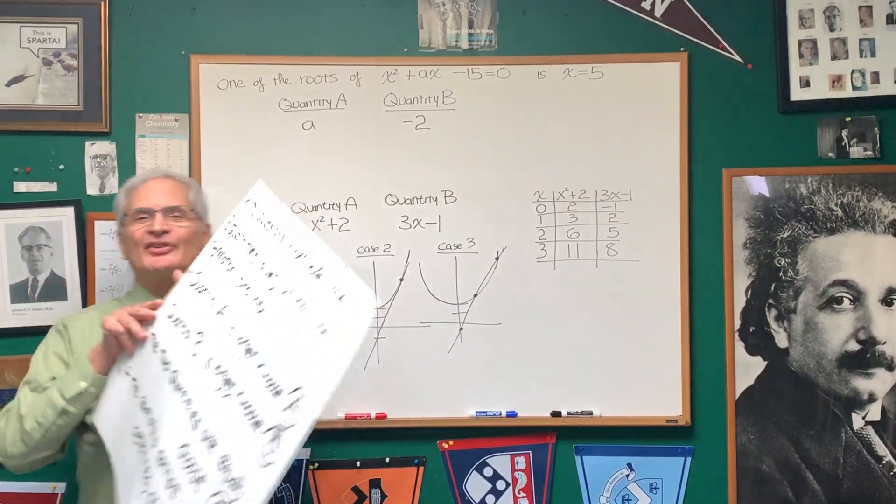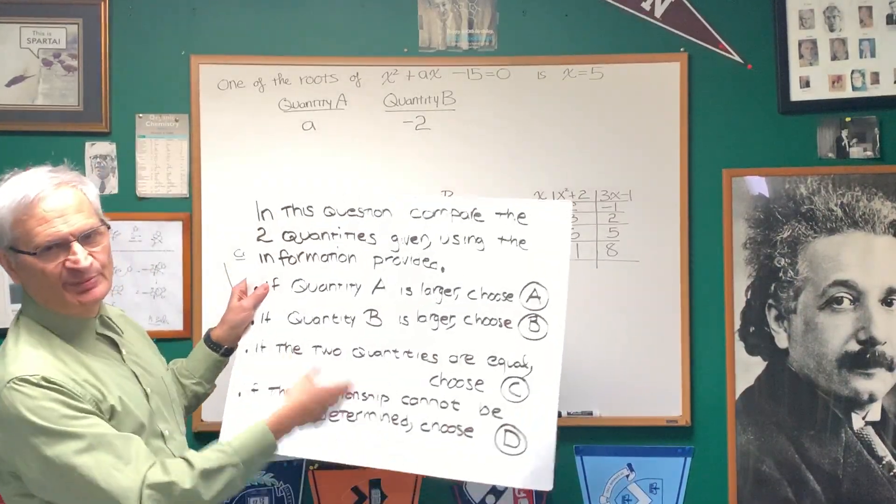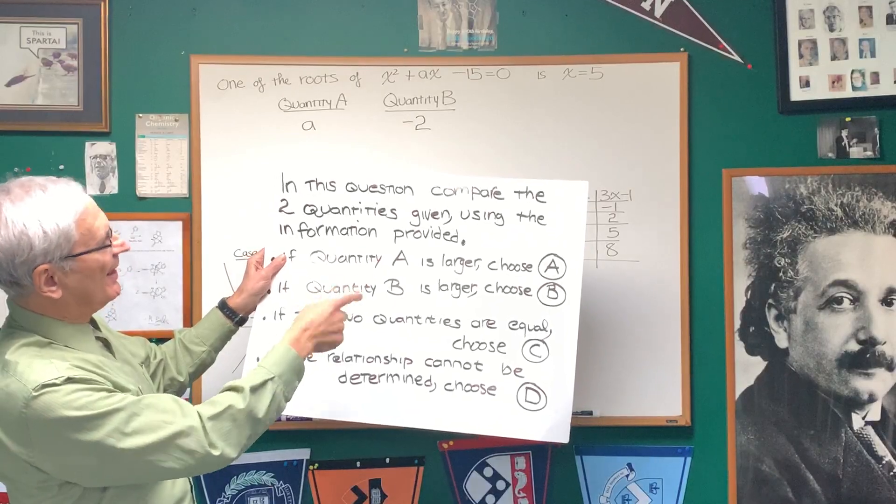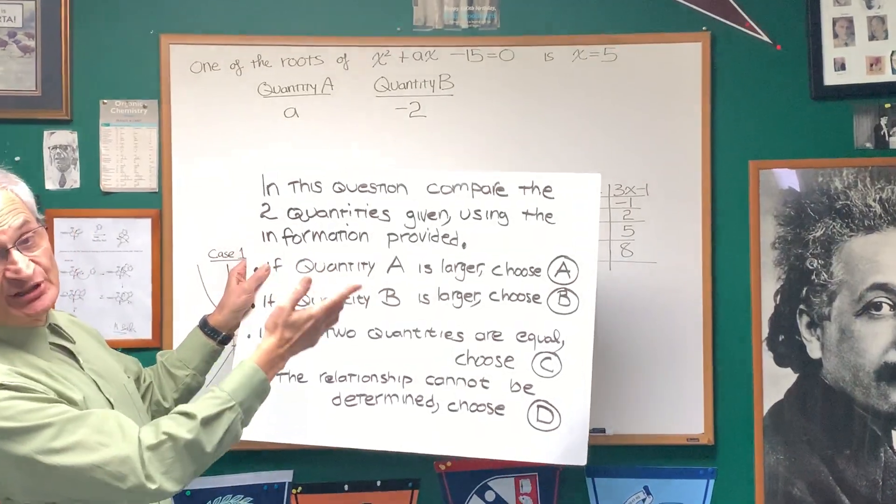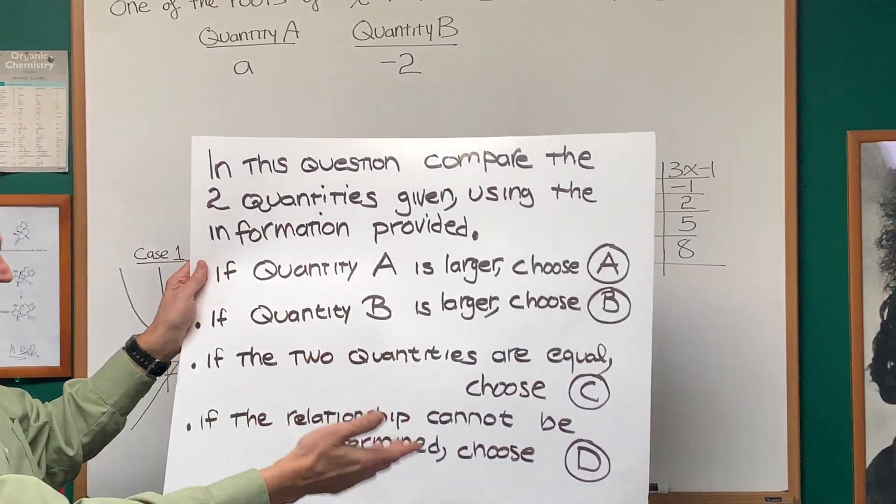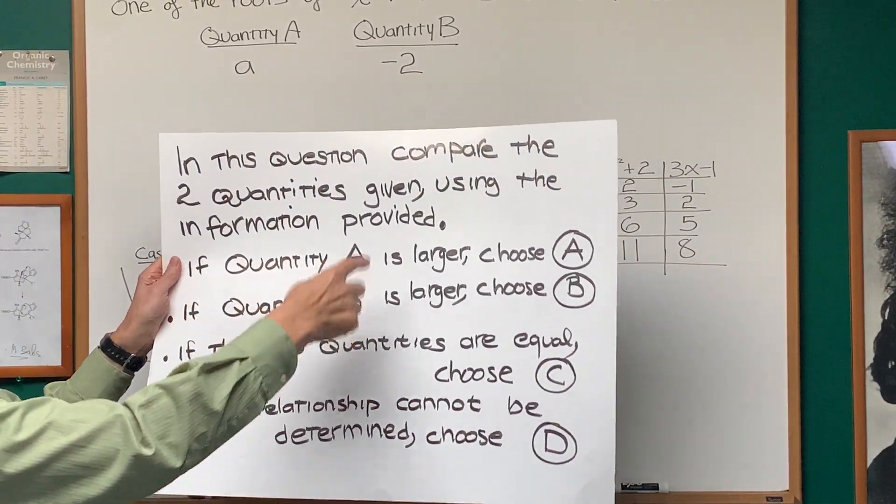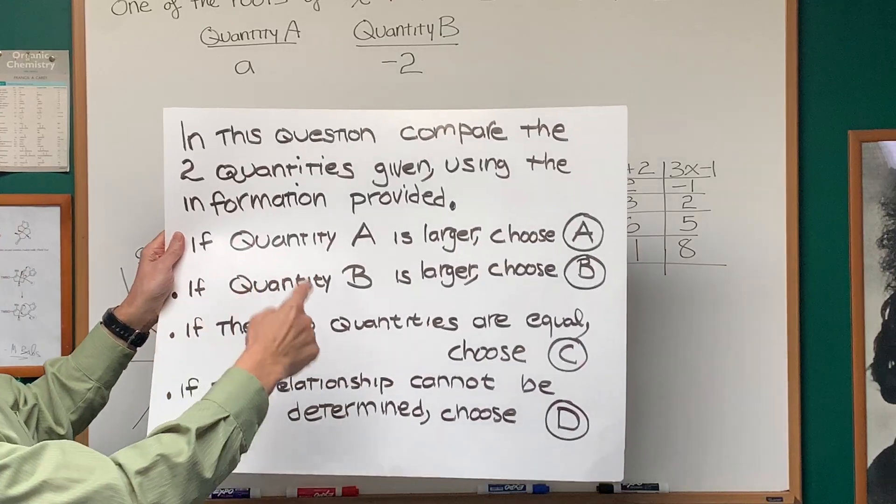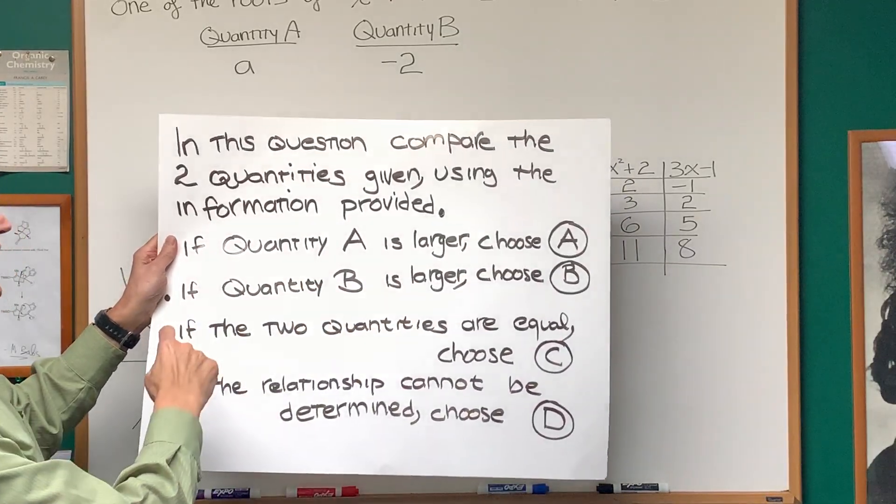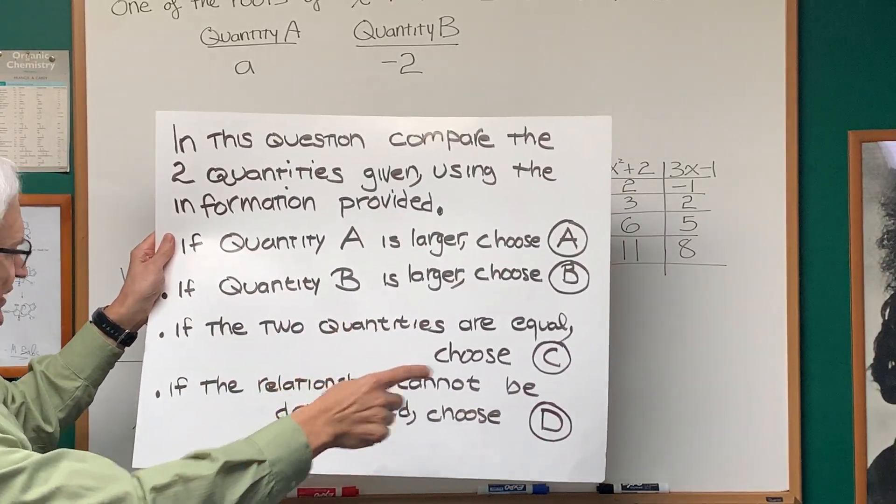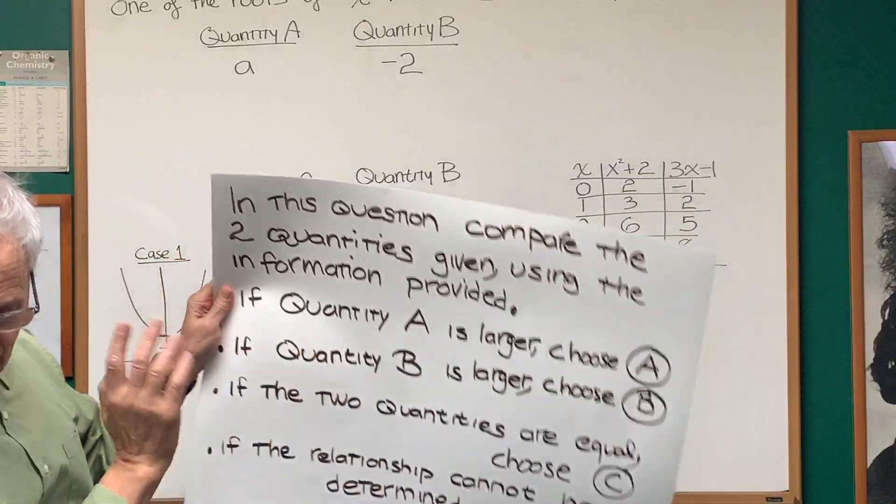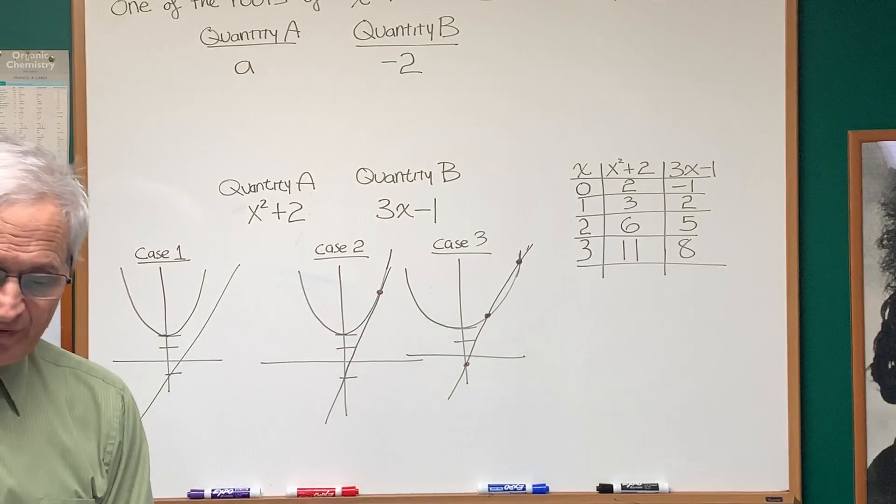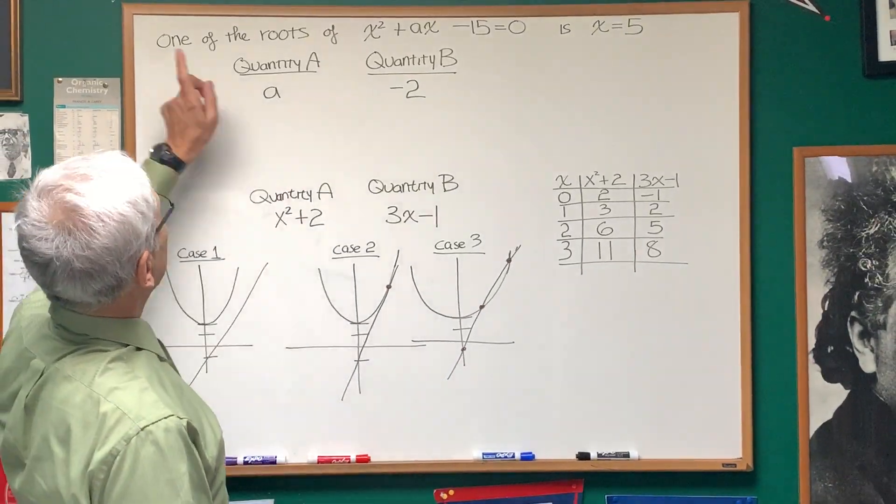Okay, well let's be enchanting then. This type of question will be preceded by this preamble. In this question, compare the two quantities given using the information provided, quantity A and quantity B. If quantity A is larger, choose answer A. If quantity B is larger, choose B. If the two quantities are equal, choose C. If the relationship cannot be determined, choose D. We're going to do two problems with that structure.